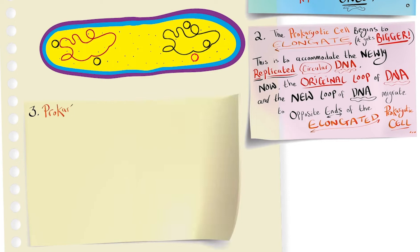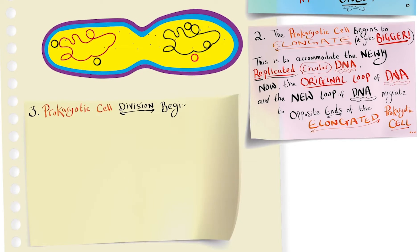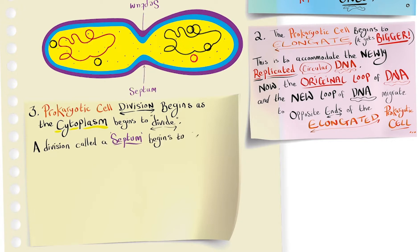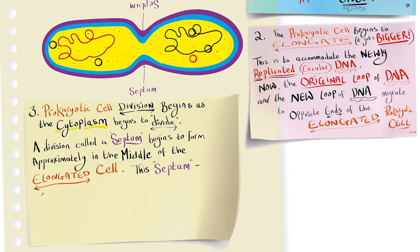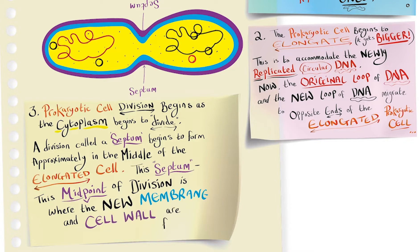In step three, prokaryotic cell division begins as the cytoplasm begins to divide. A division called a septum begins to form approximately in the middle of the elongated cell. And this septum, this midpoint of division, is where the new membrane and new cell wall are formed.